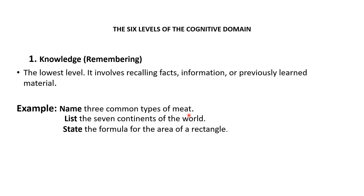For example, at the Remember level you might ask: name five common types of meat; list the seven continents of the world; or state the formula for the area of a rectangle. So this level is focused on recalling. This is the first level of the cognitive domain.